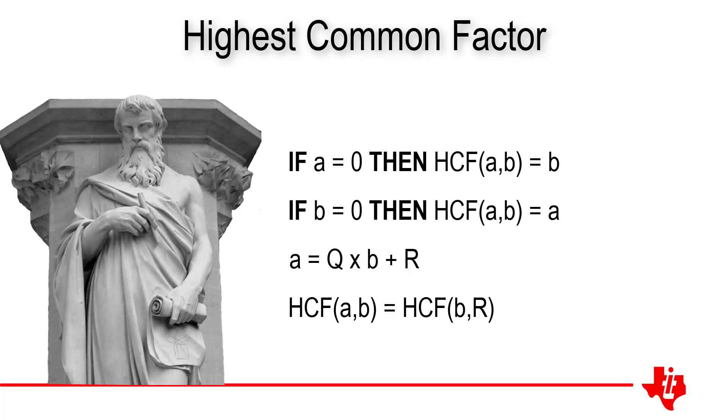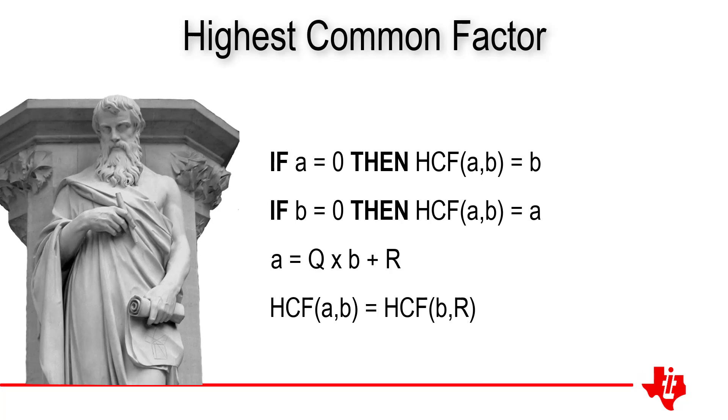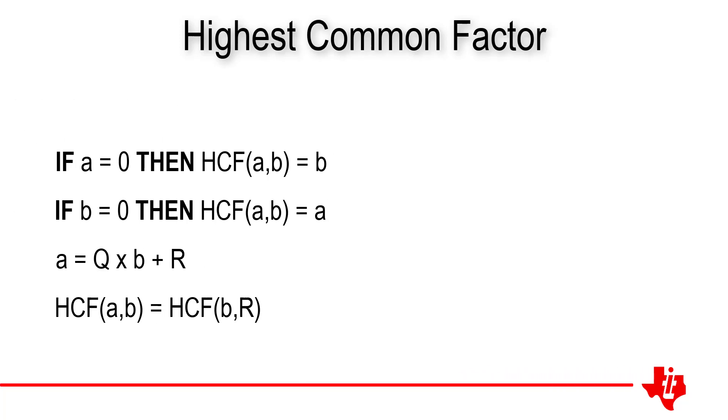And this is the clever part of the algorithm. To understand how it all works, let's find the highest common factor of 1,995 and 770. We start by letting a equal 1,995 and b equal 770. We move past the first two lines in the algorithm since neither a nor b is equal to 0.